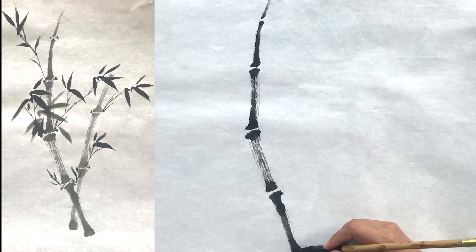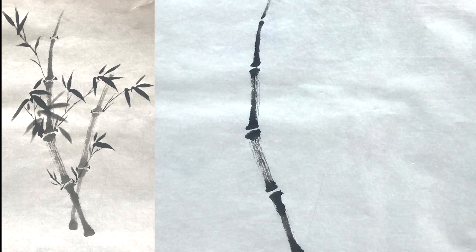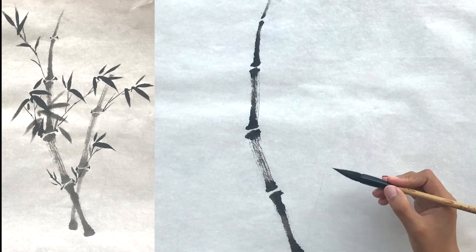The higher the section, the thinner it should be. Now paint a shorter pole across the first pole.